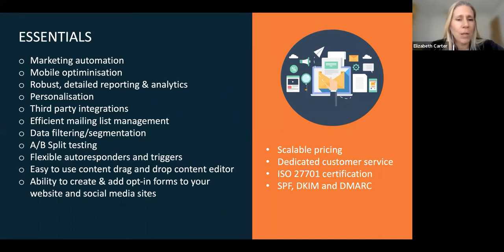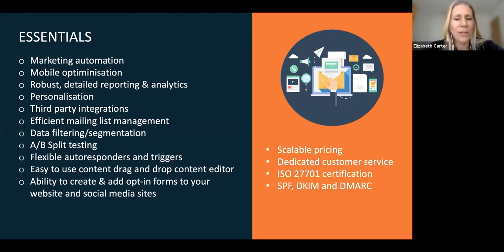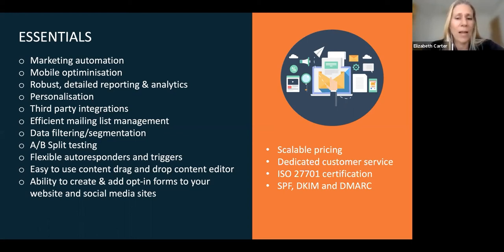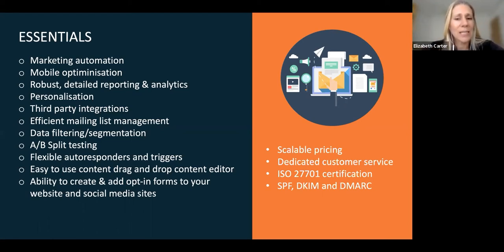Data filtering and segmentation: with email segmentation, you're dividing your subscriber list into smaller audiences based on a set of characteristics. Segmentation allows you to personalize your messaging to specific people, which results in higher engagement because the topics are more relevant to them. Generally, segments are used to differentiate subscribers based on their behavior, activity, individual preferences, and other information you might have about them. AB split testing: depending on your ESP, you can split-test the subject title, the from name, or the campaign design.